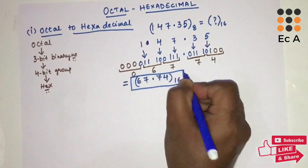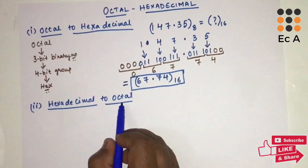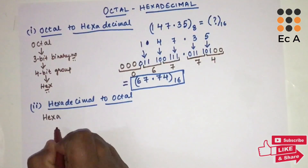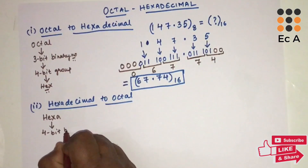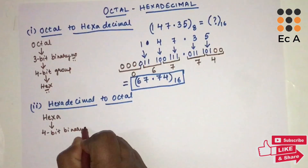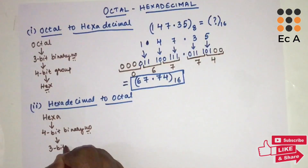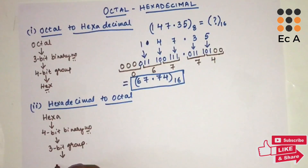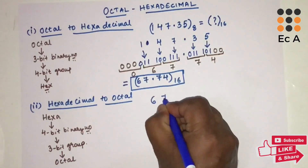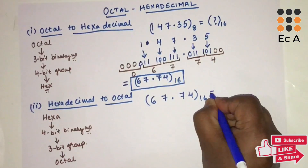Now let us see the conversion from hexadecimal number to octal number. The procedure is: take the given hexadecimal number, write it in 4-bit binary, then group that 4-bit binary into groups of 3 bits. From this 3-bit grouping we can write the equivalent octal number.